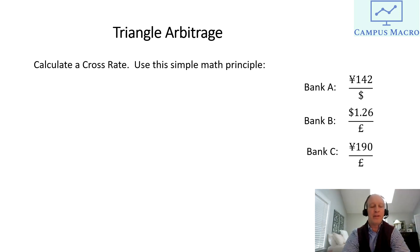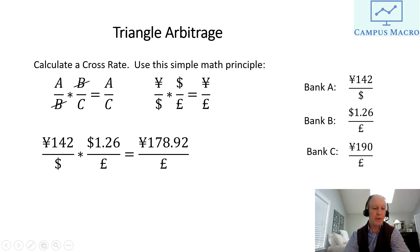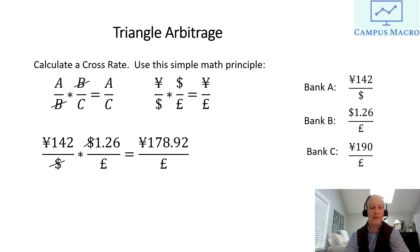To figure this out, we calculate what's known as a cross rate using a simple math procedure. If you take A/B multiplied by B/C, you get A/C, because the B in the numerator and denominator cancel out. For example, yen-per-dollar times dollar-per-pound gives yen-per-pound. Using the bank quotes: 142 yen/$ × $1.26/£ — the dollar signs cancel — giving us 178.92 yen per pound.